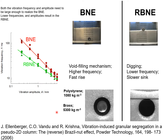Lower frequencies and lower amplitudes result in the reverse Brazil nut effect. Let's demonstrate that with two different experiments. On the left-hand side, we take a column full of polystyrene particles, colored white, and we have a large brass intruder that is heavy and has a density of 5300 kilograms per cubic meter. The polystyrene particles are 1080 kilograms per cubic meter. I'm going to vibrate this column at a high frequency. You see, the intruder has risen to the top.